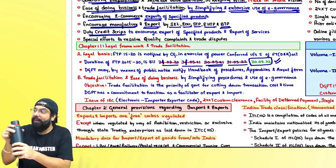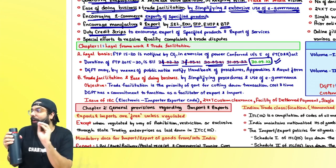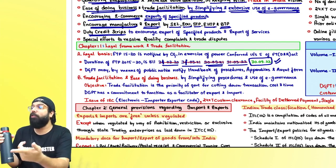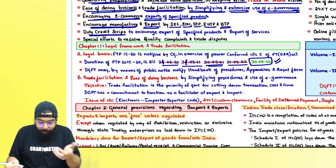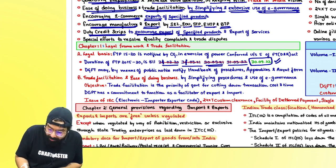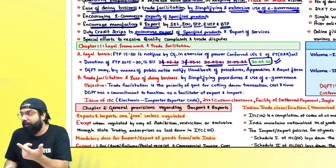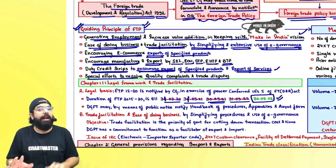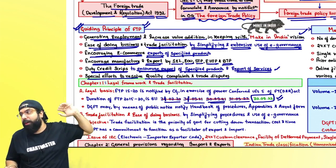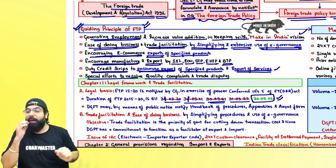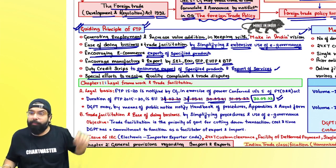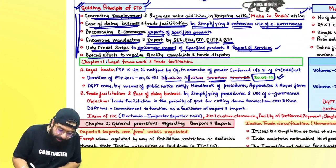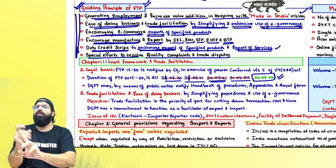Other guiding principles include encouraging e-commerce export of specified products, encouraging manufacture and export, promoting SEZ, EOU, STP (Software Technology Park), Electronic Hardware Technology Park, and Bio Technology Park — these entities are given benefits in FTP so they can import without paying duty and export to earn foreign currency. Duty credit scripts are issued to encourage export of specified Make in India products.